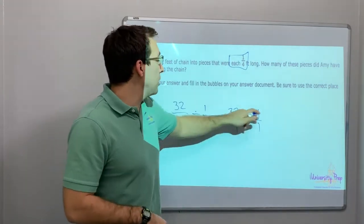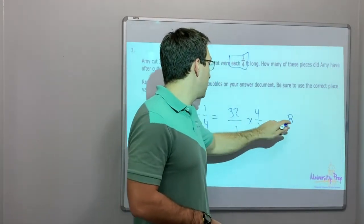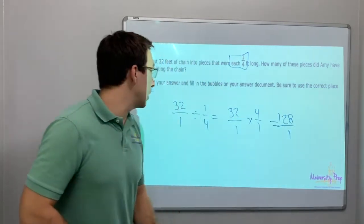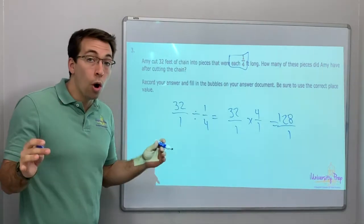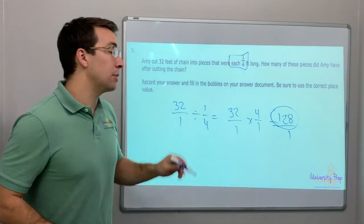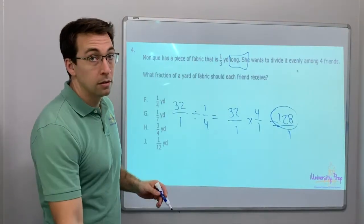Each is division. 32 over one divided by one over four equals 32 over one times four over one. 32 times four. Well, four times two is eight. Equals eight. And then four times three is 12. 128 over one. Whoa. So she had 128 pieces. And with this question, you have to bubble it in. You don't have multiple choice.